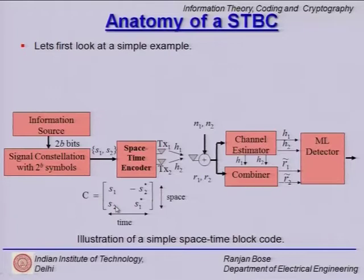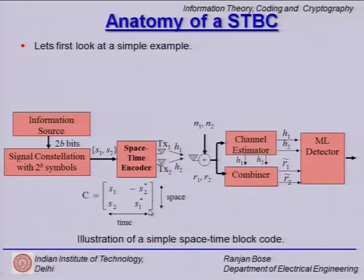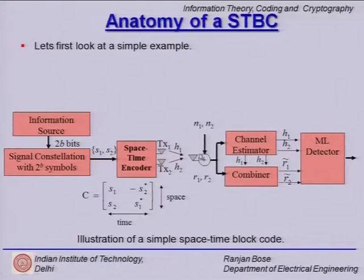For those same bits we have picked up S1 and S2, but in the second time slot we send out minus S2* and S1*. S1 and S2 belong to a complex constellation, so we have the complex conjugates here. From antenna element 1 we send out minus S2*, and from antenna element 2 we send out S1*. These two go through the channel gains and we get noise N2 added, giving us two received signals in time slots 1 and 2.